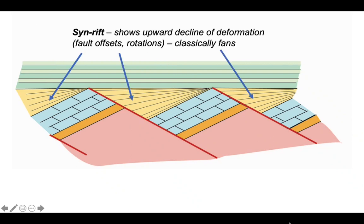The synrift strata show an upward decrease in deformation because the oldest part of that succession has seen most deformation, therefore is in this case most rotated. The youngest have seen hardly any fault slip at all so are hardly rotated. Classically these show growth fans.